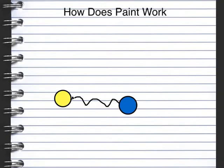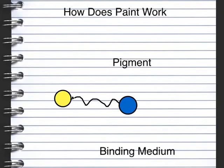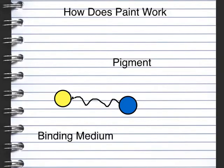So how does paint actually work? Here we've got our pigment which is the yellow. We've got our binding medium which is the stick in between. And then we have our solvent which is the blue thing just here.